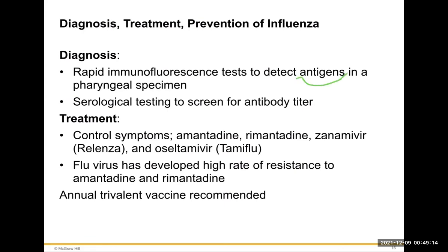Symptoms include fever, headache, malaise, pharyngeal pain, shortness of breath, and coughing. Weakened host defenses predispose the patient to secondary bacterial infections, especially pneumonia. You don't die from the flu — you die from pneumonia; the flu weakens you so pneumonia can take over. Diagnosis uses rapid immunofluorescent tests to detect antigens in pharyngeal specimens and serological blood testing to screen for antibody titers. Treatment controls symptoms with amantadine, rimantadine, zanamivir, and oseltamivir — Tamiflu. The flu virus has developed high resistance to amantadine and rimantadine. Annual trivalent vaccine is recommended.